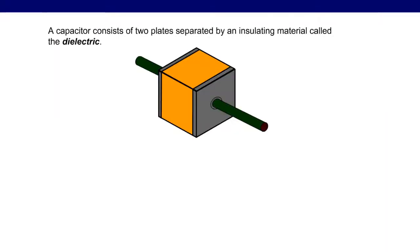Capacitor Values. A capacitor consists of two plates separated by an insulating material called the dielectric. Capacitors store energy in the form of an electrostatic charge.